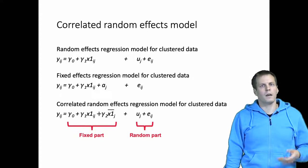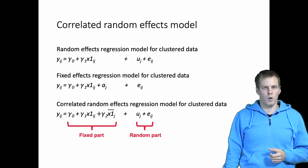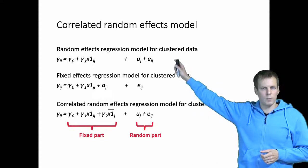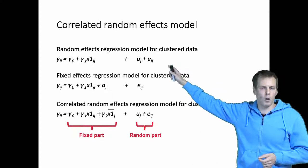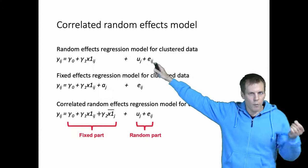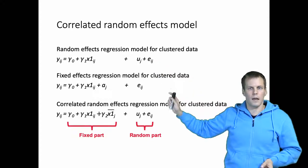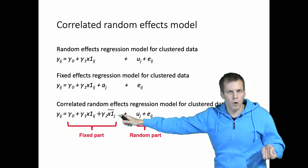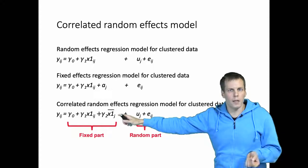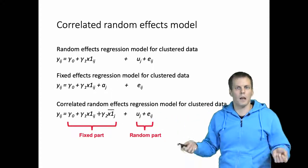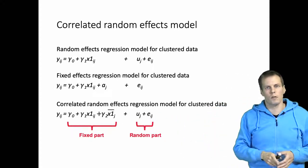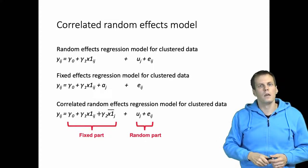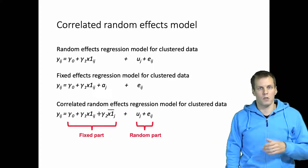The idea of the correlated random effects model is that we take the random effects model — we model the unobserved heterogeneity in the random part — and we add cluster means of all level one predictors to the model. That allows us to have level two predictors, which of course equal their cluster means, as predictors in the model.